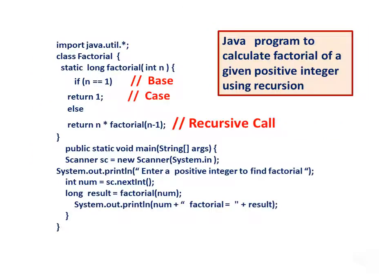Java program to calculate the factorial of a given positive integer using recursion. Import java.util.*; class factorial — static long factorial(int n): if n equals 1, return 1; else return n multiplied by factorial(n minus 1). Public static void main(String[] args): Scanner sc = new Scanner(System.in); System.out.println — enter a positive integer to find factorial; int num = sc.nextInt().